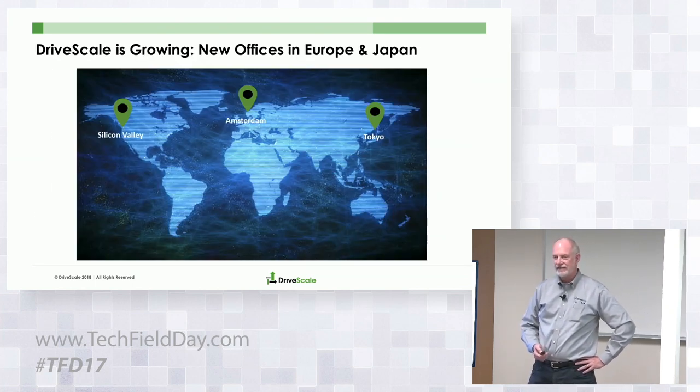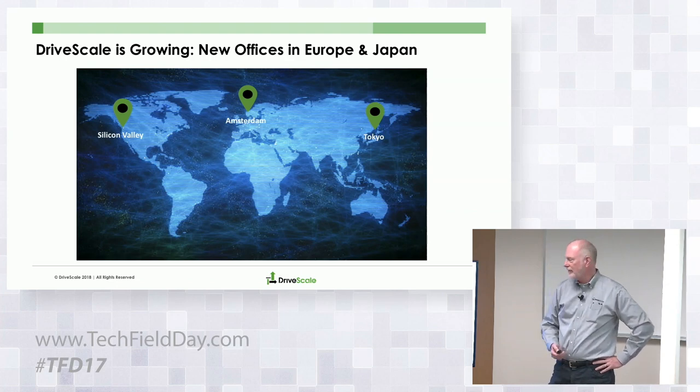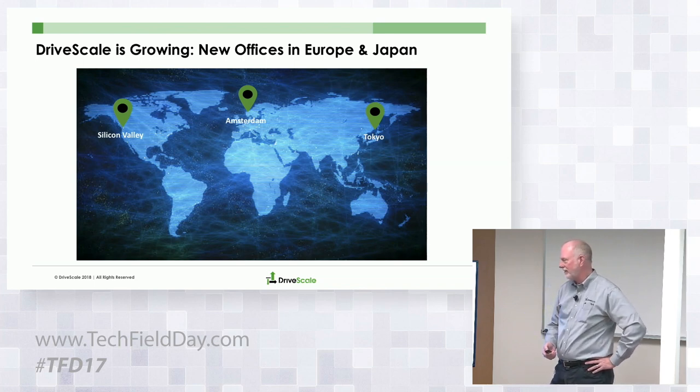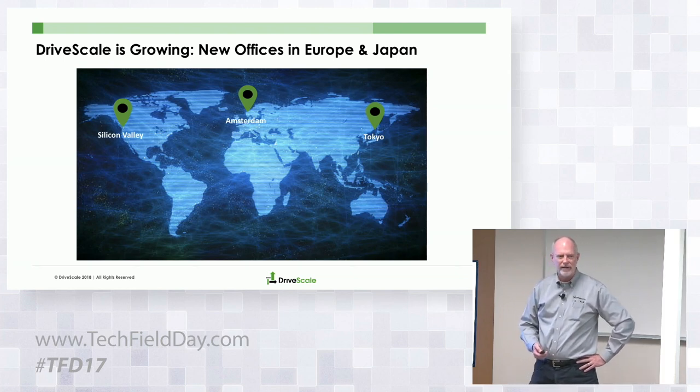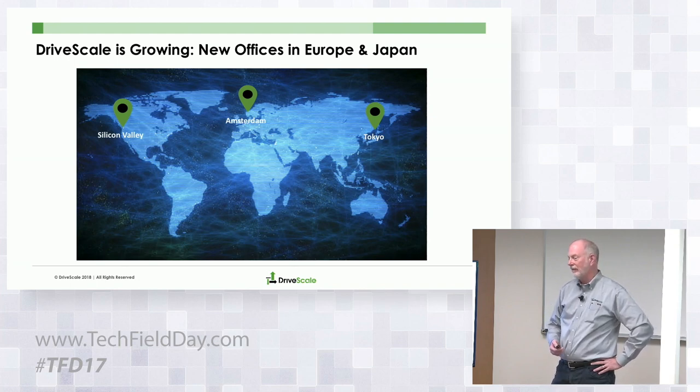To cast a broad net, we just opened an office in Tokyo, we're very close to announcing a BV in Amsterdam, and we have a customer in Shenzhen, China — SF Express. We have a second Chinese prospect we're working closely with and expect to announce a second Chinese customer early next year. These large data-intensive computing applications are being done around the world, and as we've had success in the US, we've started getting attention from prospects globally.